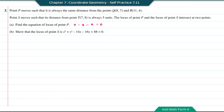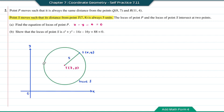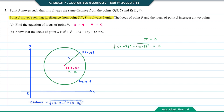Question B: show that the locus of point S is x squared plus y squared minus 14x minus 16y plus 88 equal to 0. The locus of S is a circle with center T and radius equal to 5. The distance ST equals 5. Letting point T as (x1, y1), the distance ST is the square root of (x minus 7) squared plus (y minus 8) squared, equal to 5.